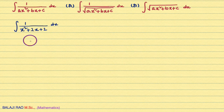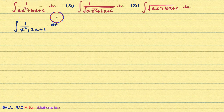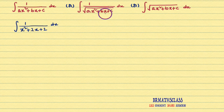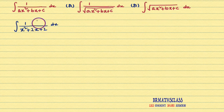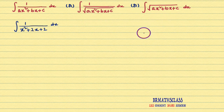If the given integral is of the form integral of 1 divided by x square plus bx plus c dx, or given integral is of this form, or given integral is of this form — if the problem is any one of these forms, the procedure is same.